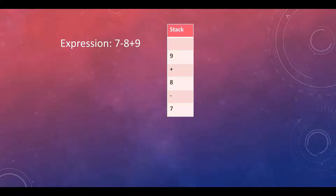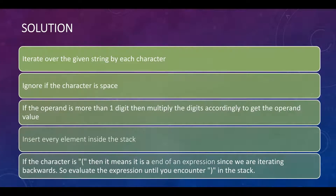Let's go over the steps needed to solve this problem. We are going to iterate over the given string character by character. We will ignore any space characters. If the operand is more than one digit, we multiply the digits accordingly to get the operand value and insert it into the stack. If the character is an opening brace, since we are iterating backwards, it means the end of an expression — so we evaluate until we encounter a closing bracket, consume all values, find the result, replace it in the stack, and keep doing this until all elements are used.